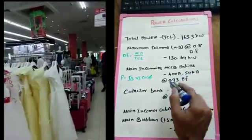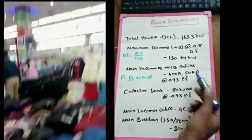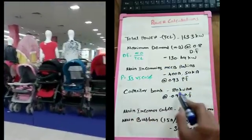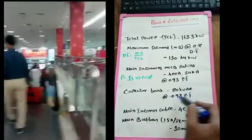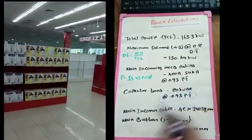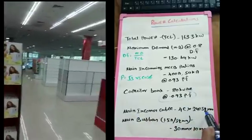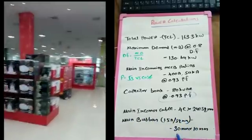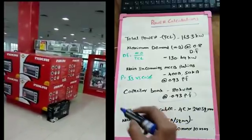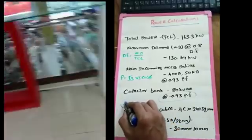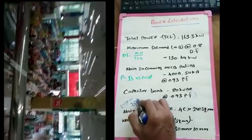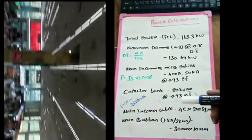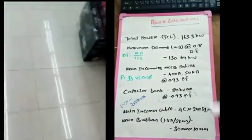This is the main MCC calculation. You can compare the power factor. The total maximum demand is 130kW. Let's get the capacitor bank - the capacitor bank is 80 kVAR. We can use a 0.93 power factor. So we can use the main incoming cable, the main bus bar, and the power calculation method. We can also use transformers.